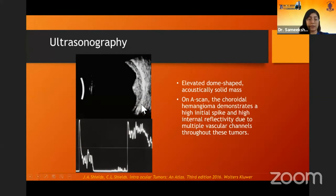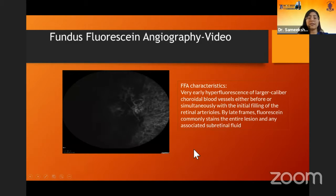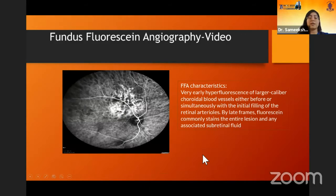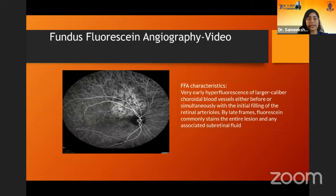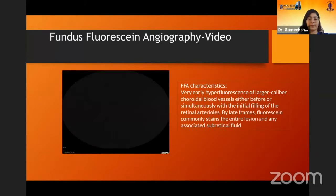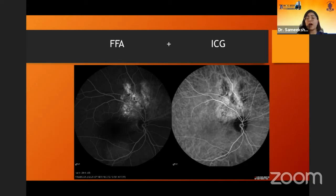The ultrasound really gives away the diagnosis. There is an acoustically solid dome-shaped mass with high internal reflectivity on A/B scan, basically due to the multiple vascular channels within the lesion. Fundus fluorescein angiography shows very early hyperfluorescent filling of the vascular channels within the mass, and towards the late frames it undergoes staining and some leakage where there is subretinal fluid. ICG is another modality which is better to delineate these lesions; within 30 seconds the lesion fills up and there is suppressive hypersescence seen after three to four minutes.